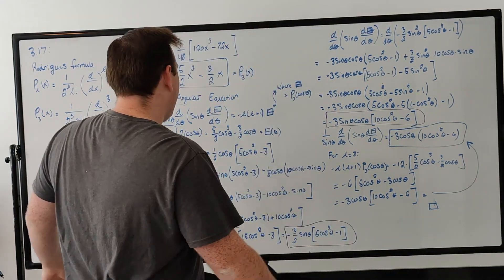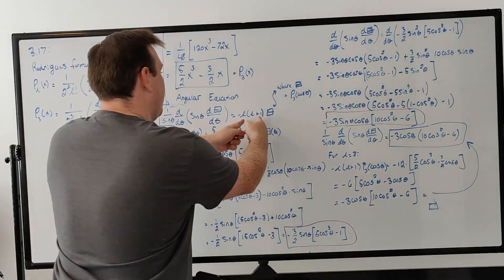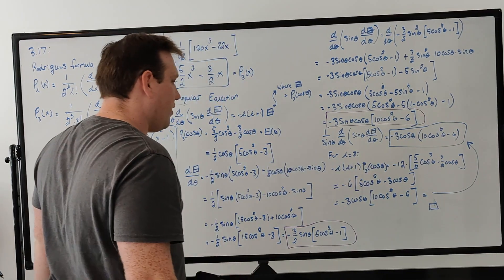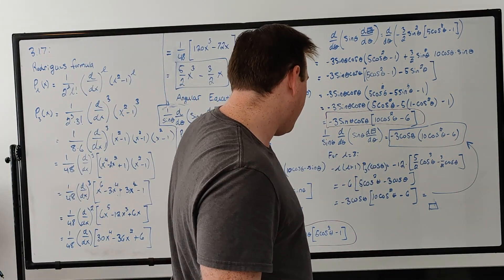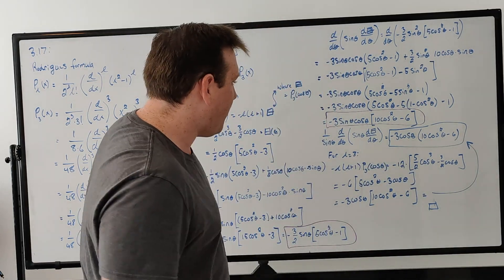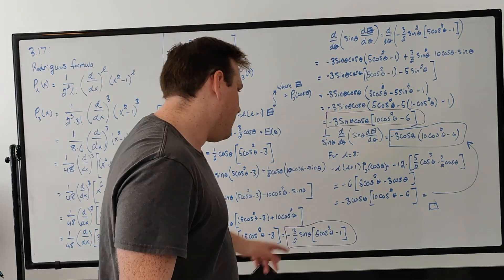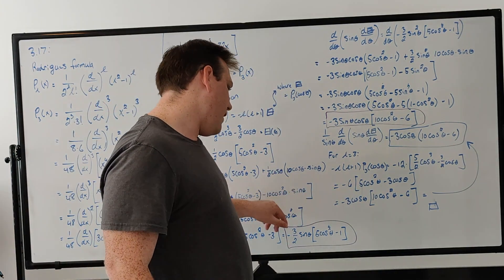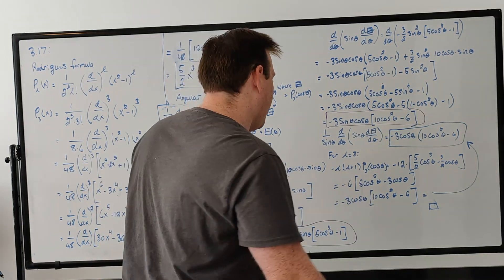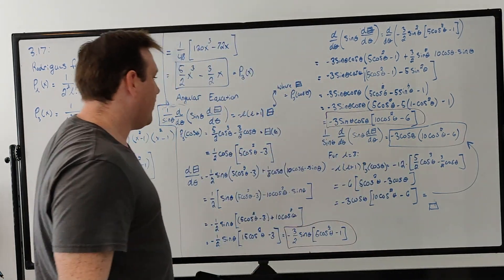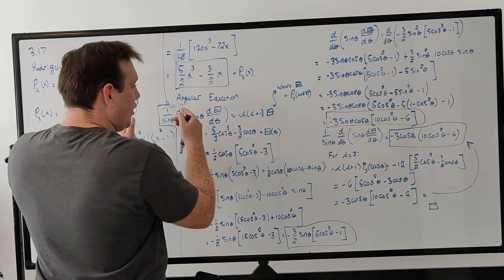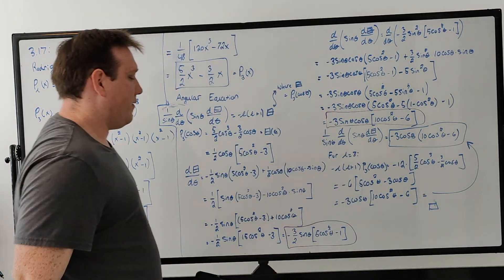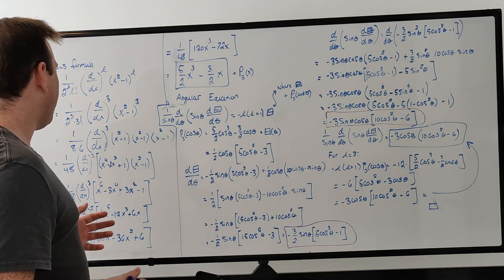For the right side with L equal to 3, we evaluate negative L(L+1) times P3: that is negative 12 times (5/2 cos³θ minus 3/2 cos θ). Factoring out 1/2 gives negative 6, and factoring out cos θ gives minus 3 cos θ times (10 cos²θ minus 6), which exactly matches the left side. This confirms the third Legendre polynomial satisfies the angular equation.